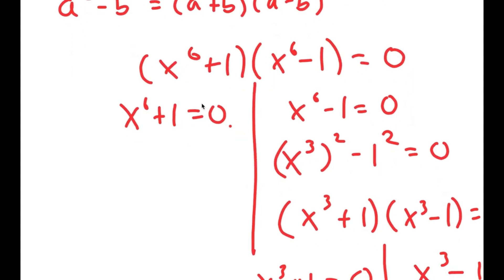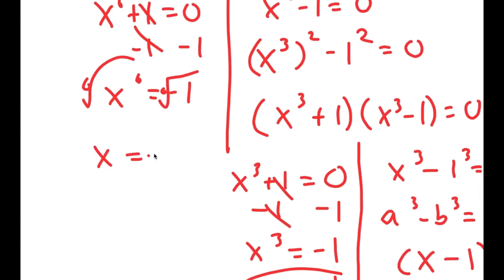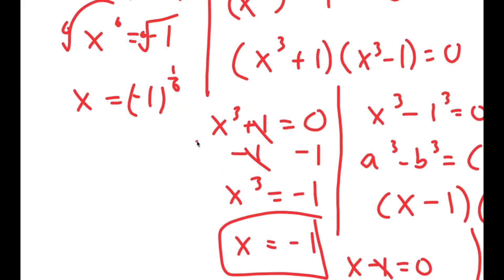Now for x to the power of 6 plus 1 equals 0, I'm going to subtract 1 on both sides, so x to the power of 6 is equal to negative 1. If I take the 6th root I get x is equal to the 6th root of negative 1, which is equal to negative 1 to the power of 1 over 6.